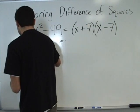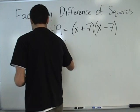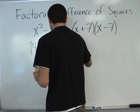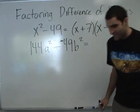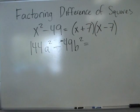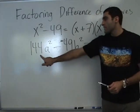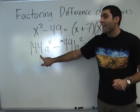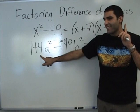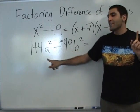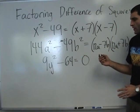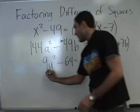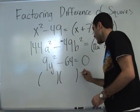More difference of squares — identify the following as a difference of squares. Is this a difference of squares? Yes. What times what makes 144a squared? 12a. 12a times 12a. What times what makes 49? And then we set those factors to 0. Hopefully you're comfortable with factoring by now.